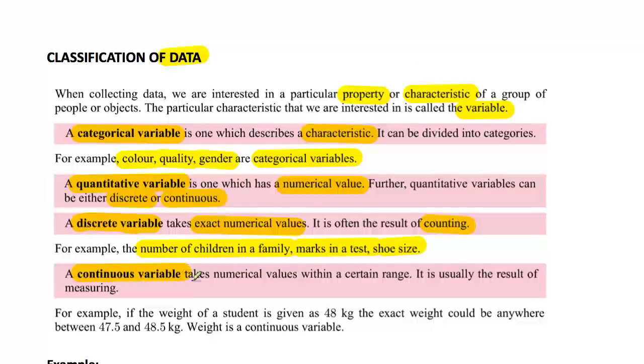Whereas continuous variables, they can take values within a range of numbers. Usually you don't count these, you measure them. And as you know, measuring is inaccurate. It just depends on the accuracy of your measuring object. Like the ruler, is it very accurate? Is it to centimeters? Is it to millimeters? Measuring often gives what we call a continuous variable. An example is weight. A person might be measured as 48 kilograms, but they could range from 47.5, which is the lower error, to 48.5. That's your upper limit. So that's a continuous variable.